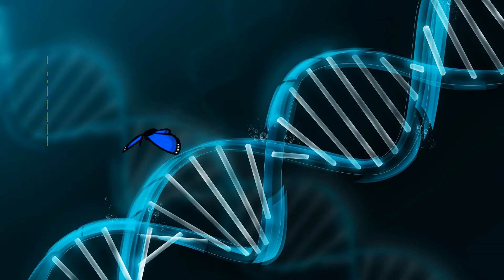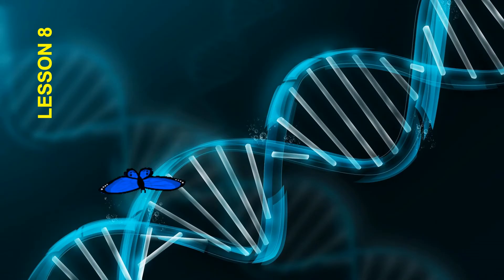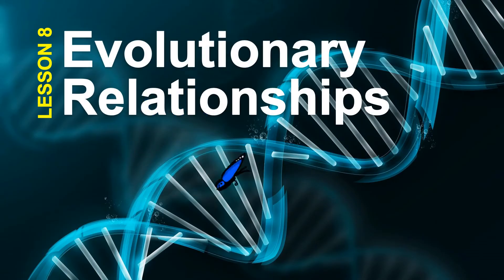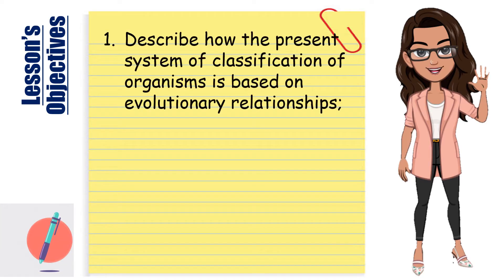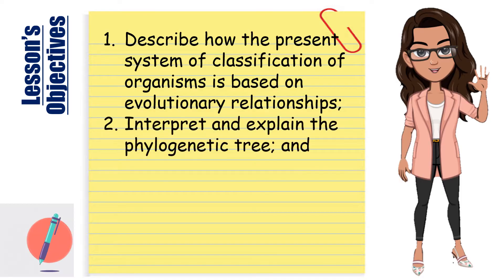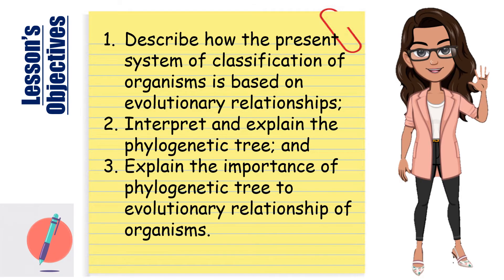My dear students, our lesson for today is Lesson 8: Evolutionary Relationships. At the end of this lesson, you should be able to describe how the present system of classification of organisms is based on evolutionary relationships, interpret and explain the phylogenetic tree, and explain the importance of phylogenetic tree to evolutionary relationships of organisms.